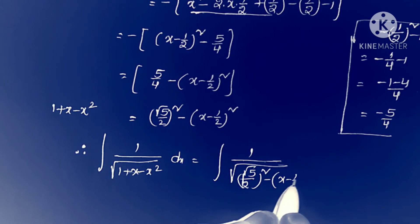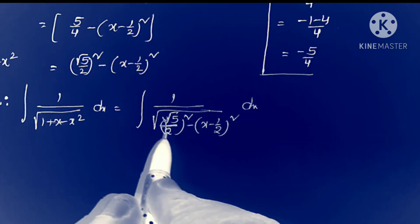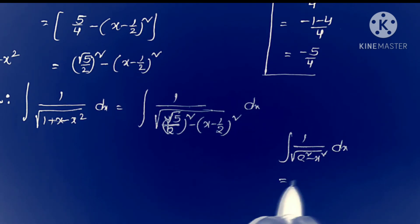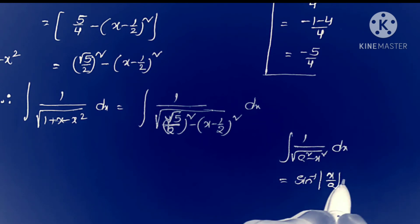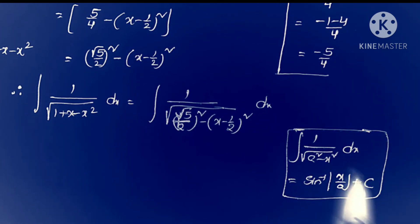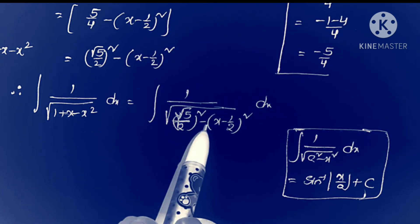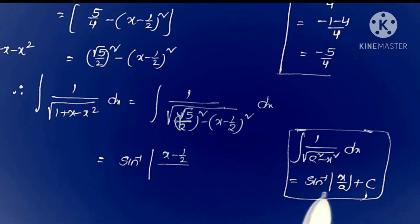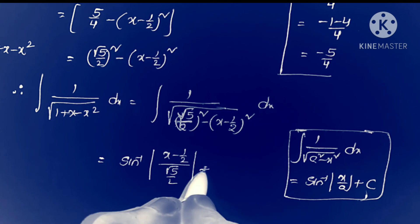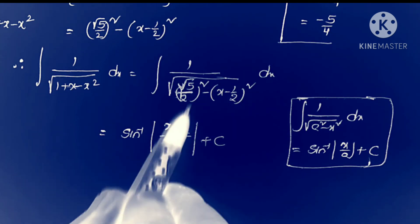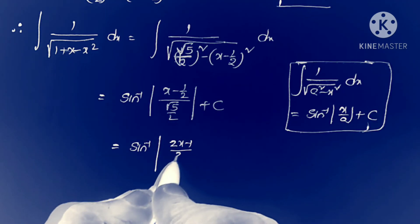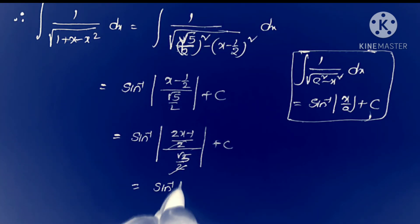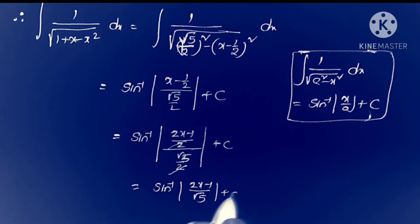This is in the form of integral 1 by square root of a squared minus x squared, dx, whose answer is sin inverse of x by a plus c. Here a equals root 5 by 2 and x equals x minus 1 by 2. Applying the formula: sin inverse of (x minus 1 by 2) by (root 5 by 2) plus c. Taking LCM: sin inverse of (2x minus 1) by root 5, plus c. That's all — this is the answer.